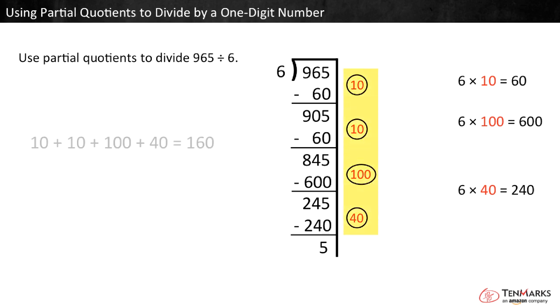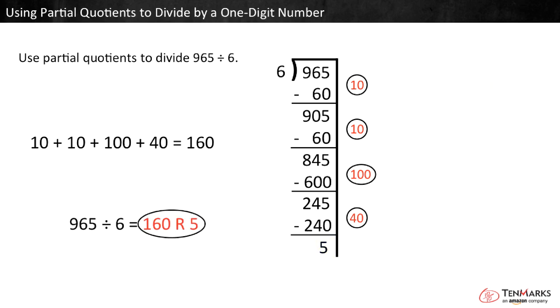These are the partial quotients. 10 plus 10 plus 100 plus 40 equals 160. The quotient is 160. There were 5 left over, so the remainder is 5. 965 divided by 6 equals 160 remainder 5.